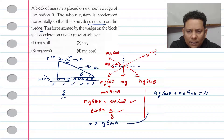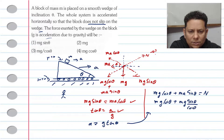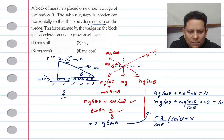Substituting A equals g tan theta into the normal force equation: N equals Mg cos theta plus Mg tan theta multiplied by sin theta, which equals Mg cos theta plus Mg times sin squared theta divided by cos theta. Taking cos theta as the common denominator, N equals Mg divided by cos theta, with the bracket giving cos squared theta plus sin squared theta.